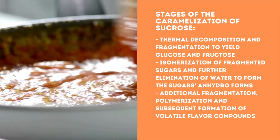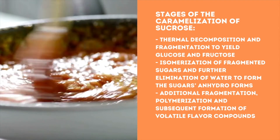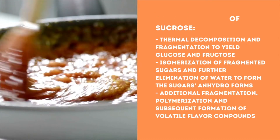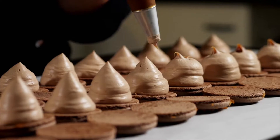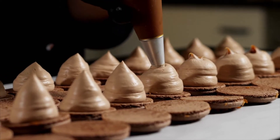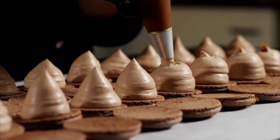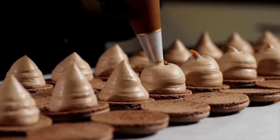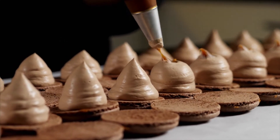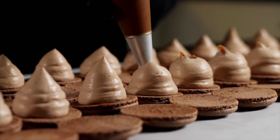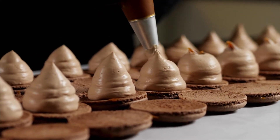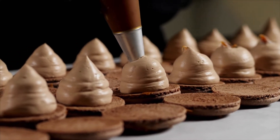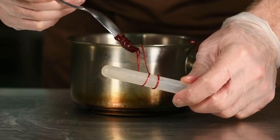Brown colored compounds such as caramelin, carmelin, and caramelans are also formed to impart desirable colors and flavors in bakery products. The caramelization process should be allowed to take place under controlled conditions to avoid the generation of excessively dark colors and bitter flavor compounds.